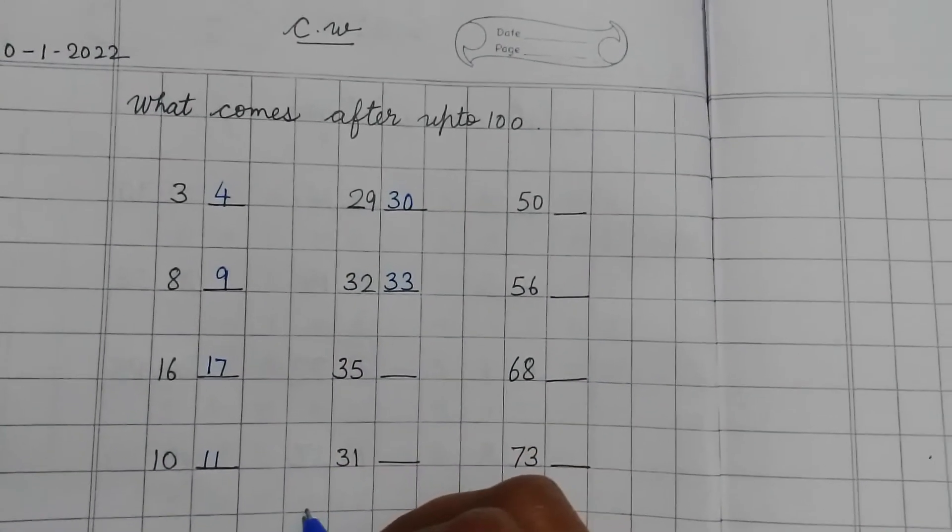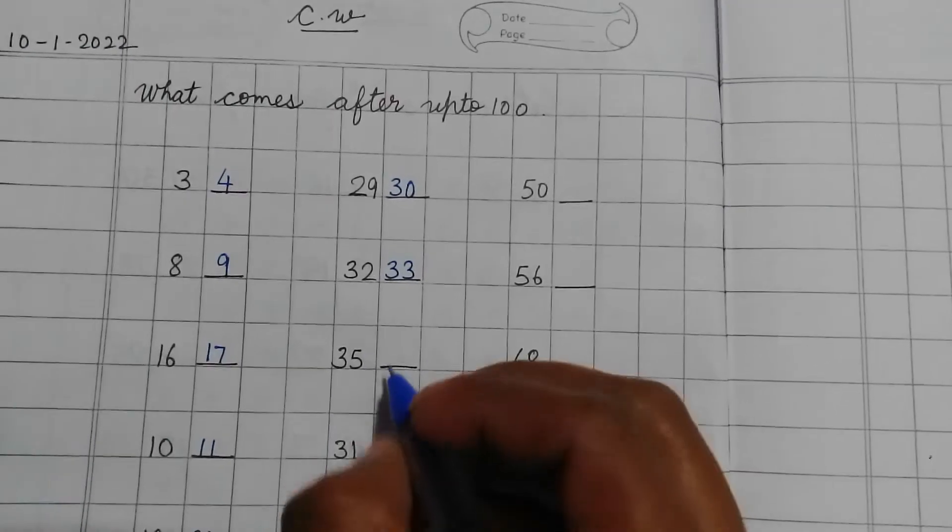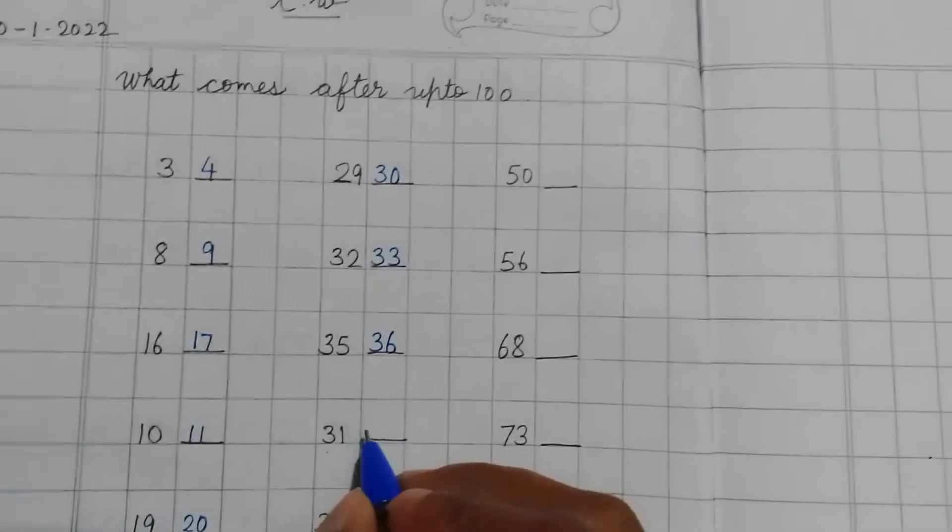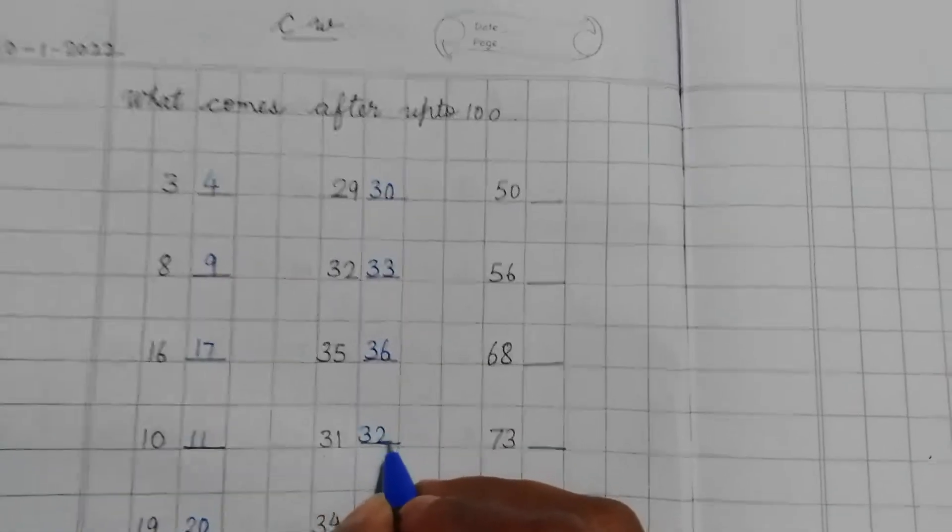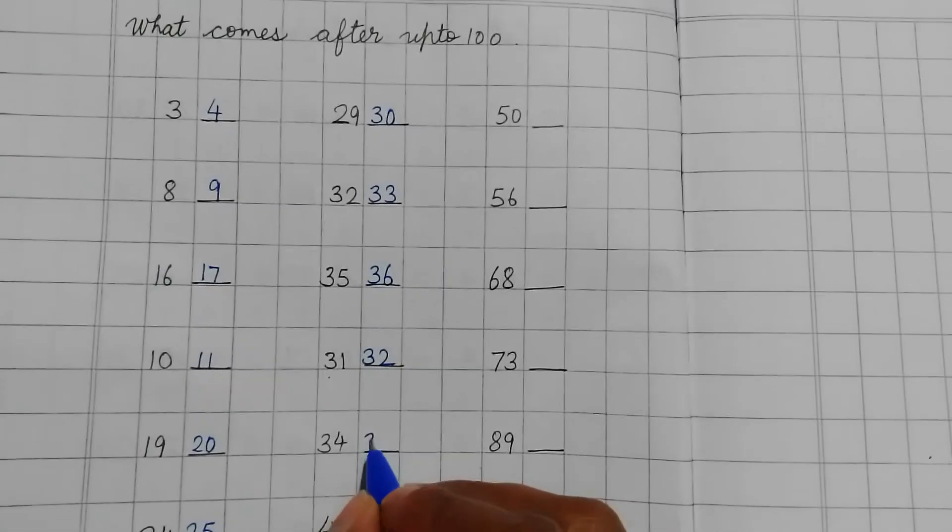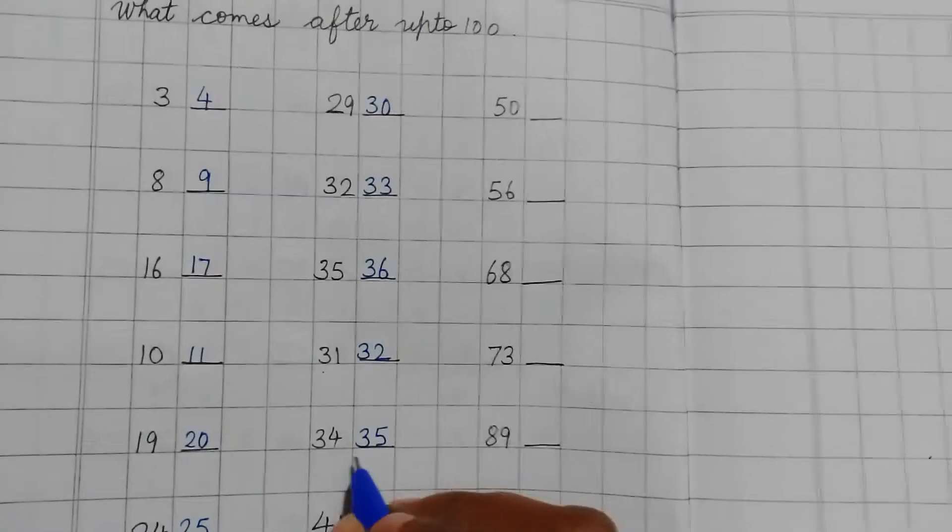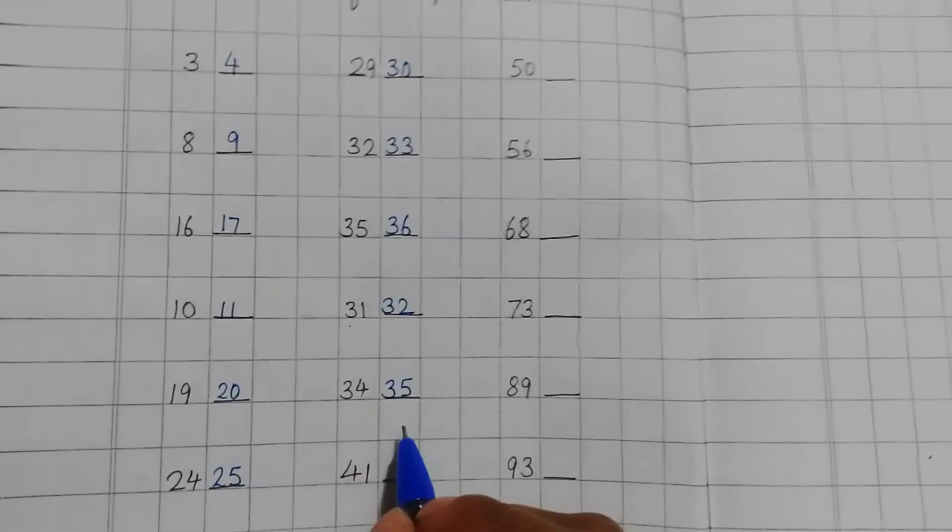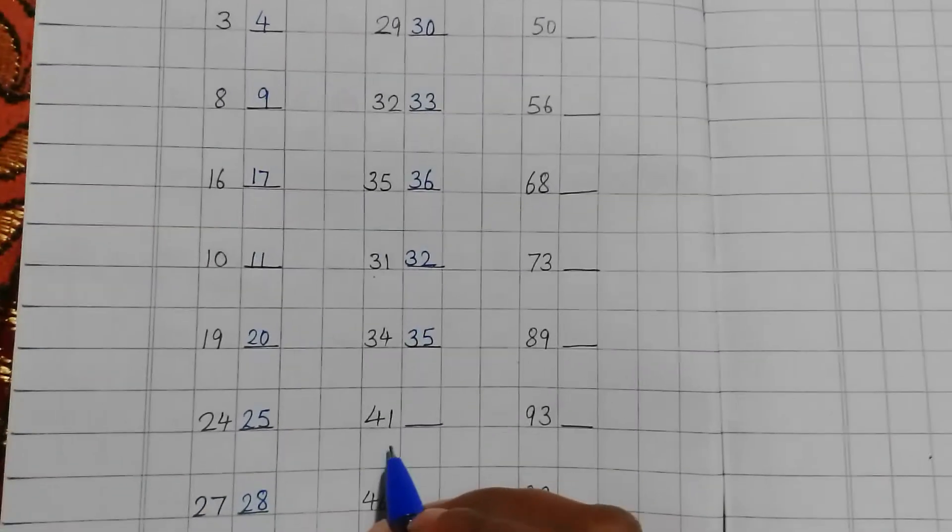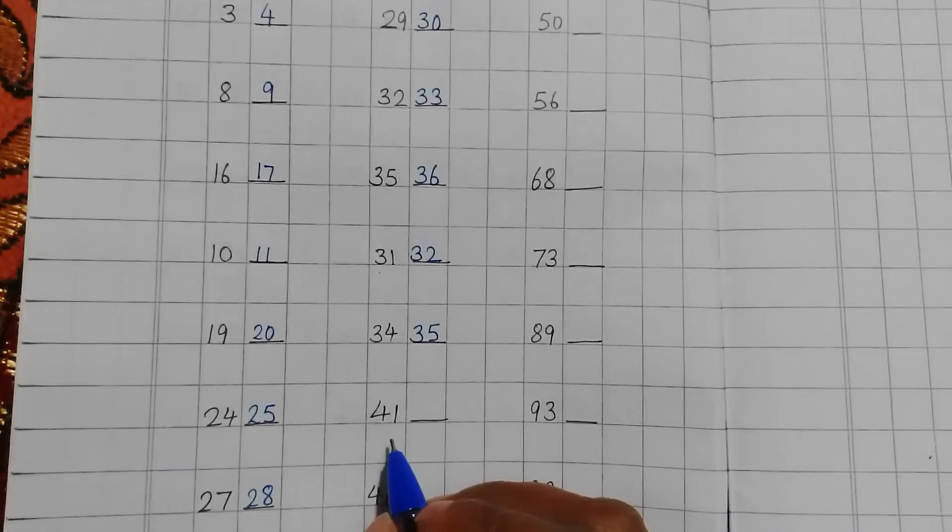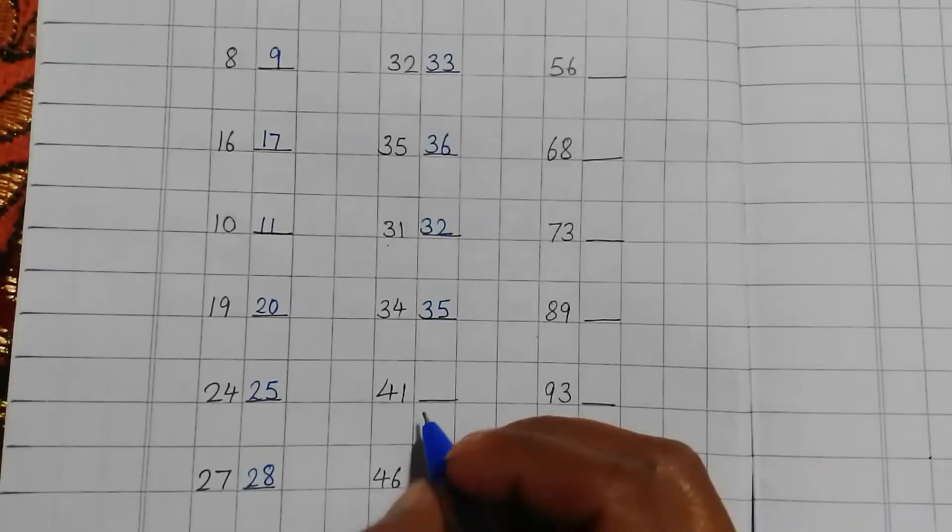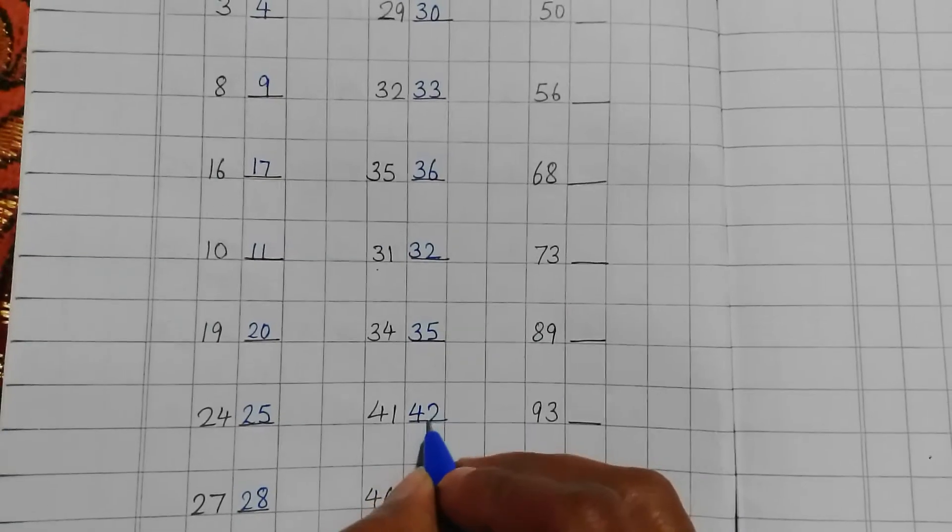35. Then what comes after 35? 36, 31, 32, 34. After 34, 35 will come. So 35 is the number that comes after 34. 41. So tell me children which number will come here? 41, 42. Very good. So right here 42.